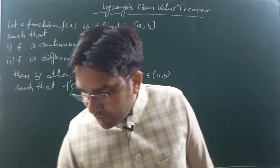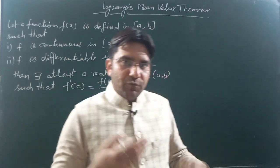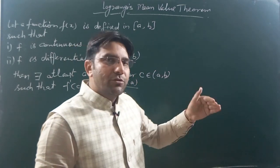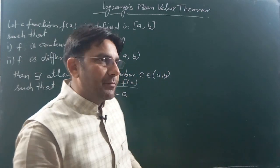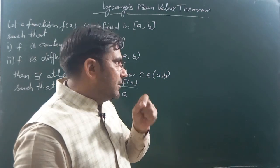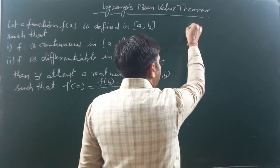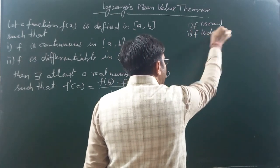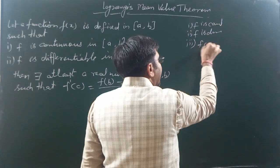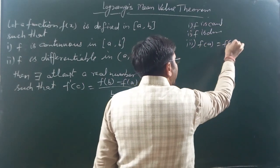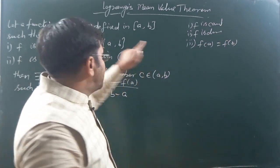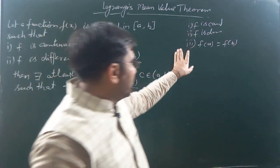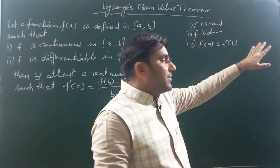Now I come to the geometrical interpretation of this theorem. When you have seen Rolle's theorem's geometrical interpretation, you will understand this easily. Let me recall Rolle's theorem: it had three conditions — f is continuous, f is differentiable, and f(a) equals f(b). Here in Lagrange's theorem, the first two conditions remain: f is continuous as well as f is differentiable. But the third condition — f(a) equals f(b) — is not required for Lagrange's theorem.